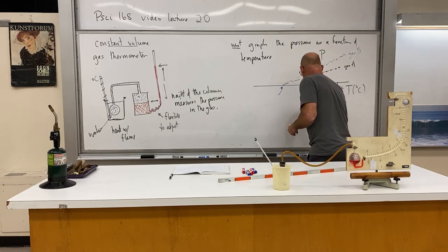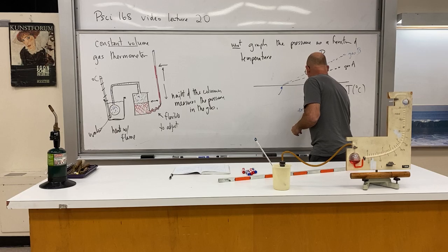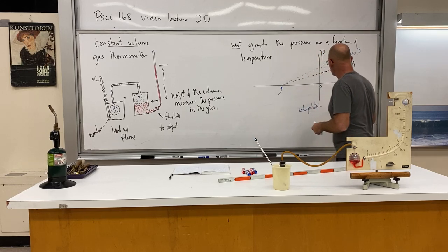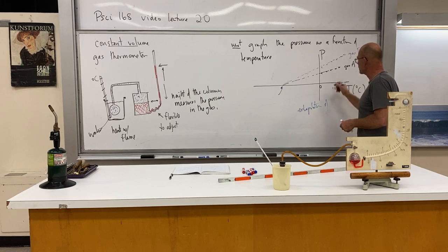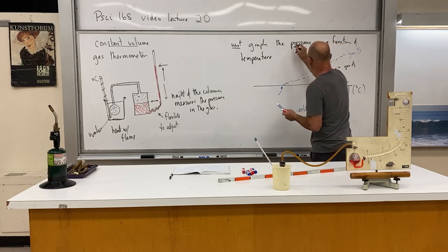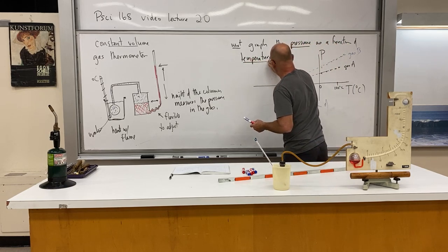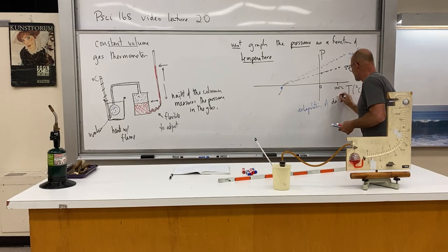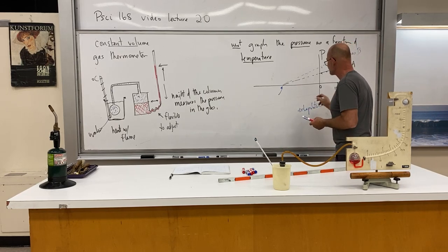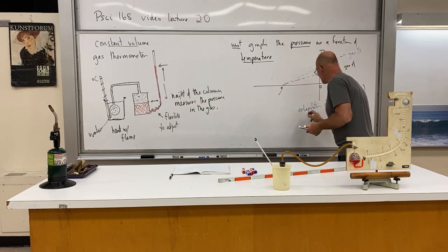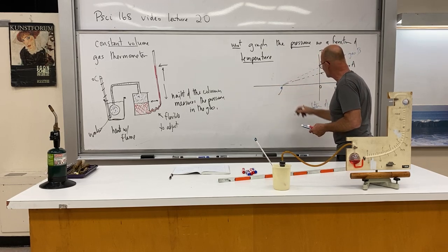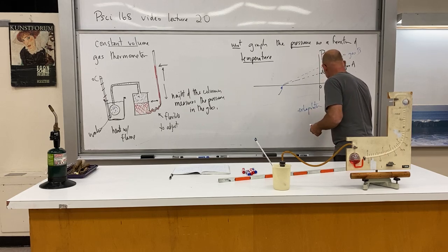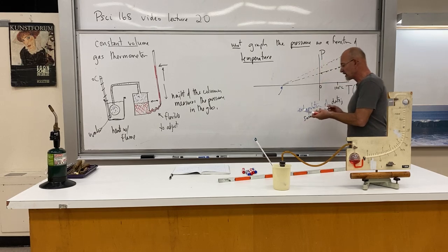So let's put that in words. Extrapolation of these pressure versus temperature graphs leads to the same point. Same temperature. That's pretty interesting. And that temperature happens to be minus 273 degrees Celsius.